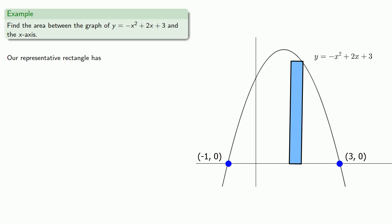That wasn't so difficult. So we see that our representative rectangle has height y, width dx, and so its area is y dx. And the area of the region will be the sum of these areas from x equals negative 1 up to x equals 3.